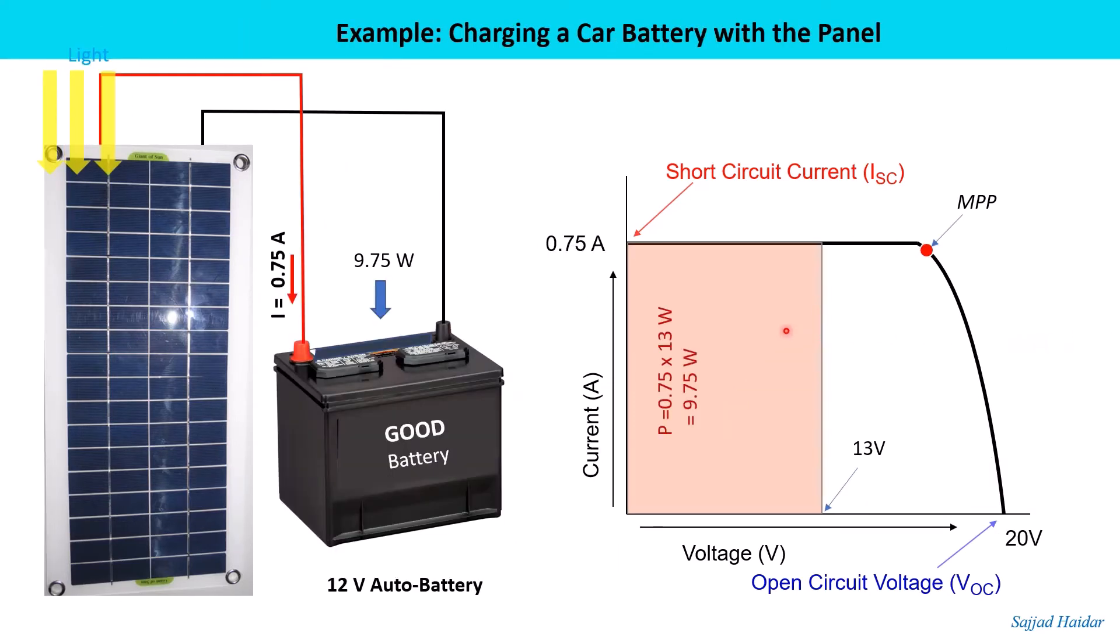So if this panel is connected to a 12 volt battery directly, then when the battery is nearly fully charged we can get the voltage across the terminal is 13 volt. So the power consumed by the battery should be 9.75 watt. You see, this is the maximum power point and we are consuming less power than which is delivered by the panel.